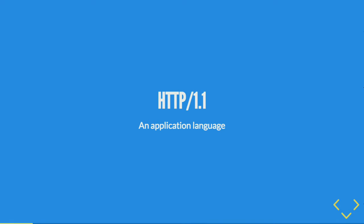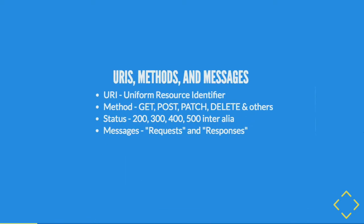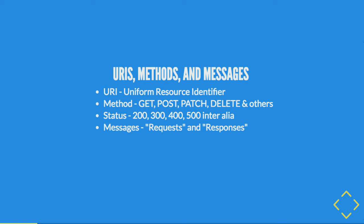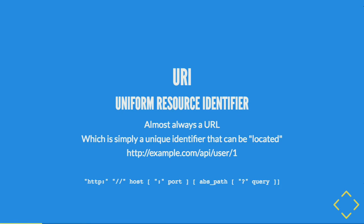So what is HTTP1 — what we've been using for over 20 years? At the highest level there are a few basic concepts: URIs, methods, and messages. A URI is a uniform resource identifier. We typically see it as a URL, but what makes a URL different is that it's locatable — you can use DNS to resolve it. You could have a uniform resource identifier without DNS resolution. Breaking it down, there's scheme, host, port, path, and query.